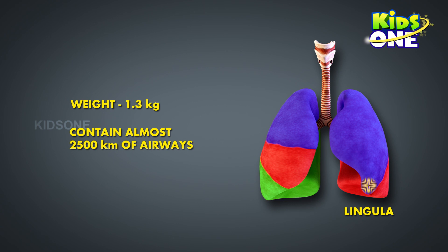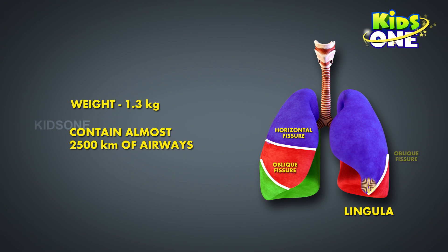The boundaries of these lobes are defined by the fissures. The right lung has two fissures — one oblique and one horizontal — and the left lung has only one oblique fissure.